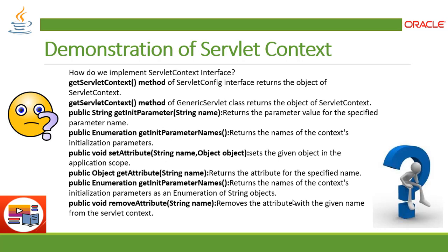To understand how to implement the ServletContext interface, there are two ways. First, there is a method getServletContext() defined in the interface which returns the object of ServletContext. Second, you can extend the GenericServlet class, which will also return the object of ServletContext, and you can implement the method getServletContext().